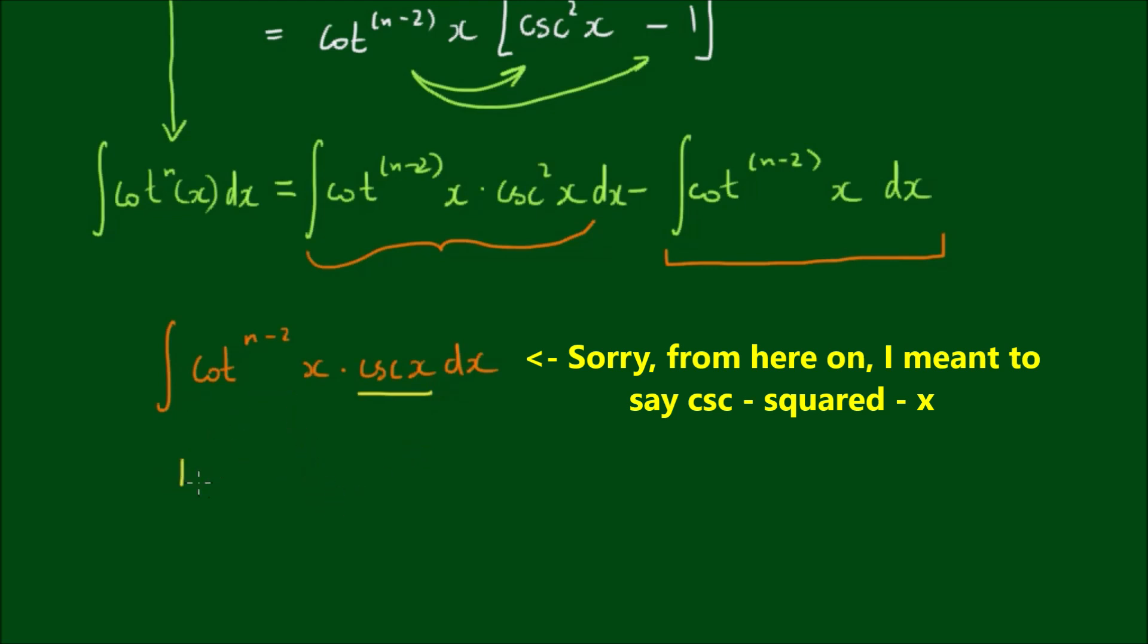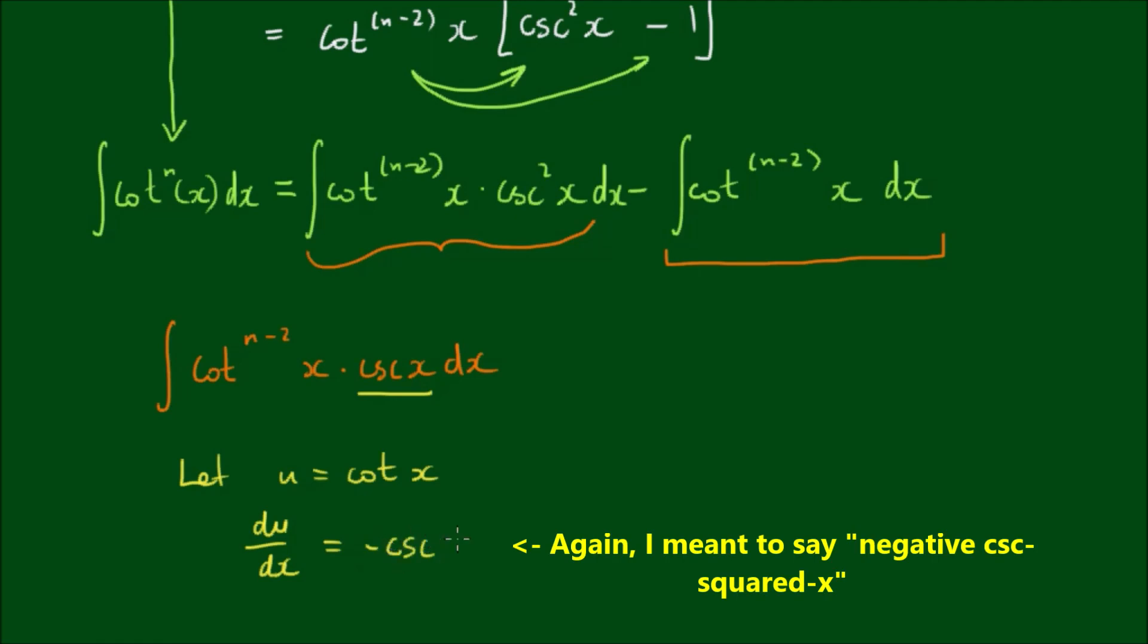So if we let u equals cot x, the derivative of u with respect to x, so the derivative of cot x, is actually equal to negative cosecant squared x. And because we can separate the differentials, we can write this as du equals negative cosecant squared x dx.